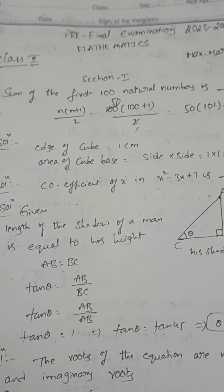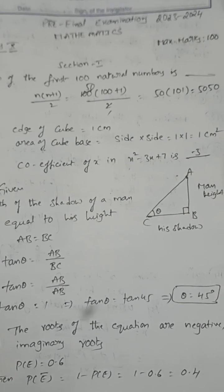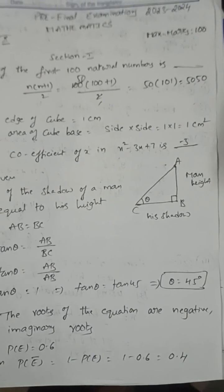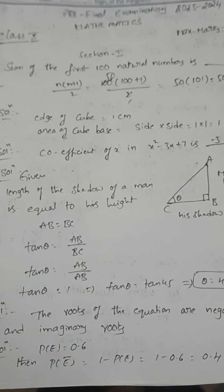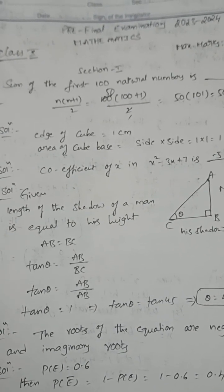Sum of the first hundred natural numbers is n(n+1)/2. n is 100, so that is equal to 5050.